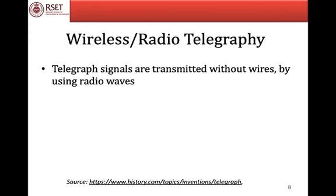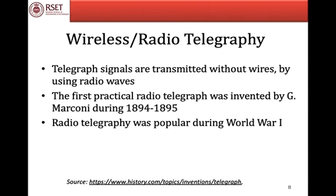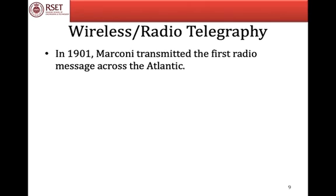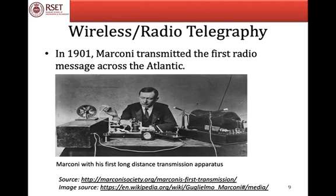Next is the radio telegraphy or wireless telegraphy, where messages were transmitted through air as radio waves. The first practical radio telegraph was invented by G. Marconi during 1894 to 1895. This method became very popular during World War I. Countries not equipped with radio telegraph were attacked by enemies who cut the underwater electrical telegraph lines. In 1901, Marconi transmitted the first radio message across the Atlantic. Here is a picture of Marconi with his first long-distance transmission apparatus.